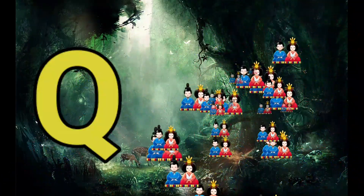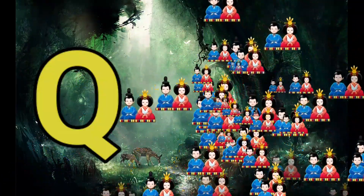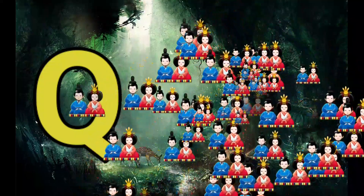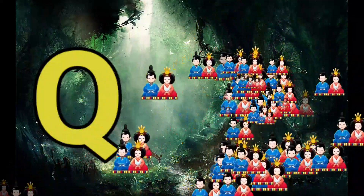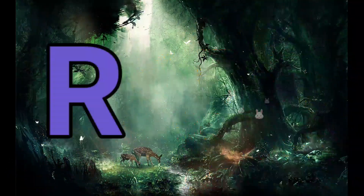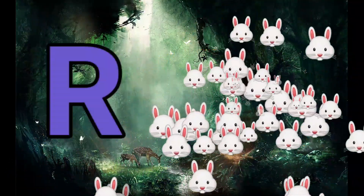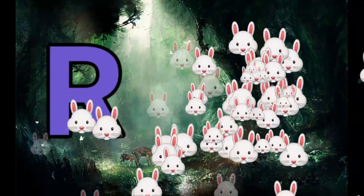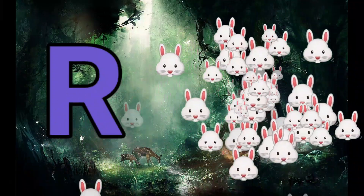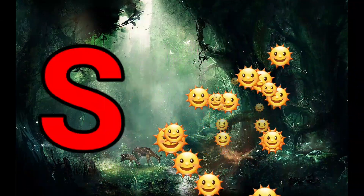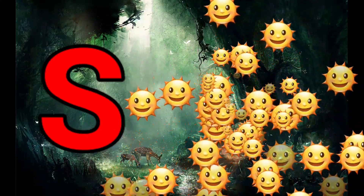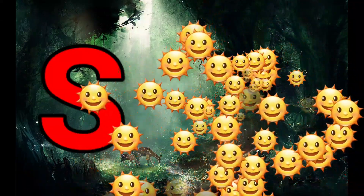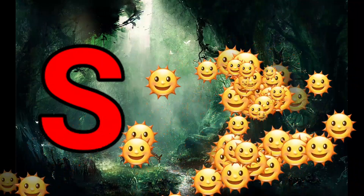Q is for Queen, Q-Q-Queen. R is for Rabbit, R-R-Rabbit. S is for Sun, S-S-Sun.